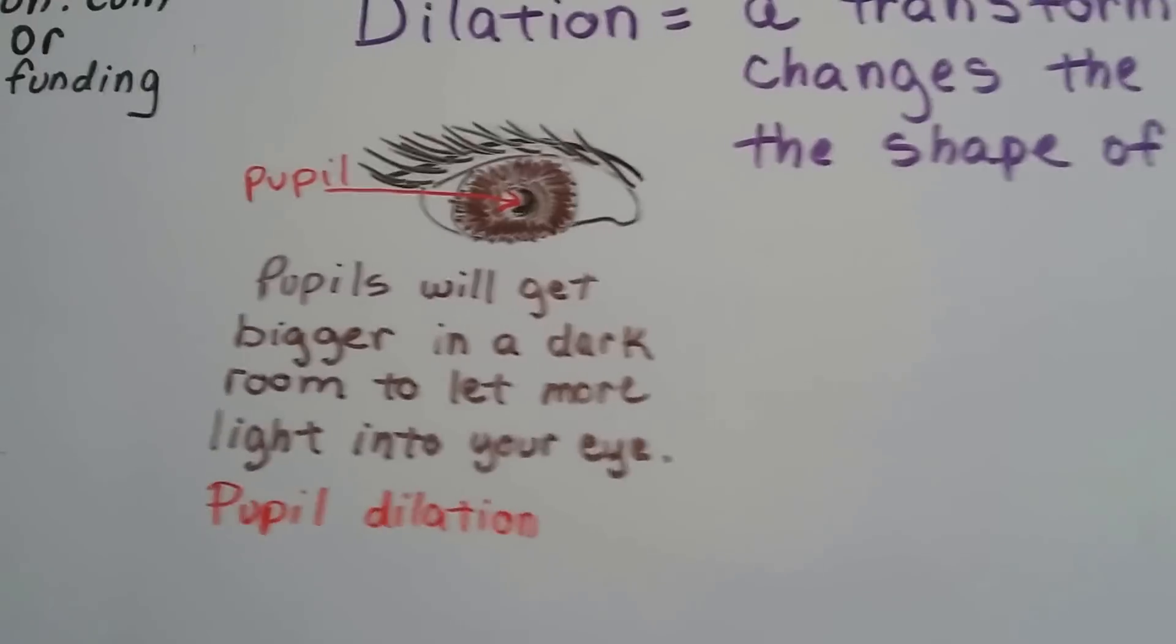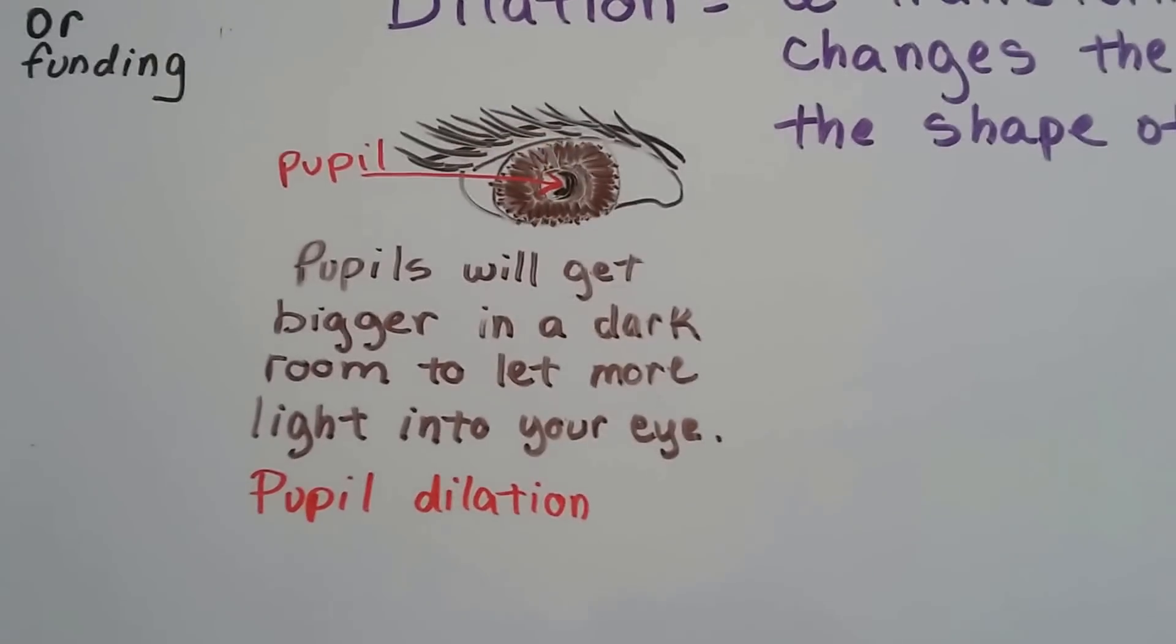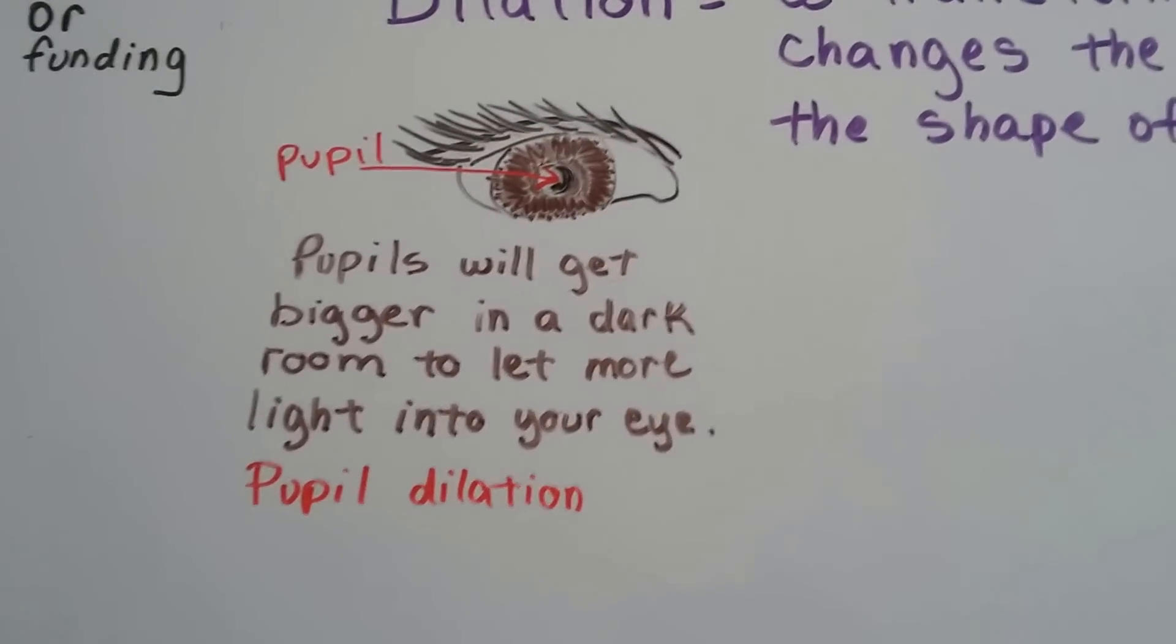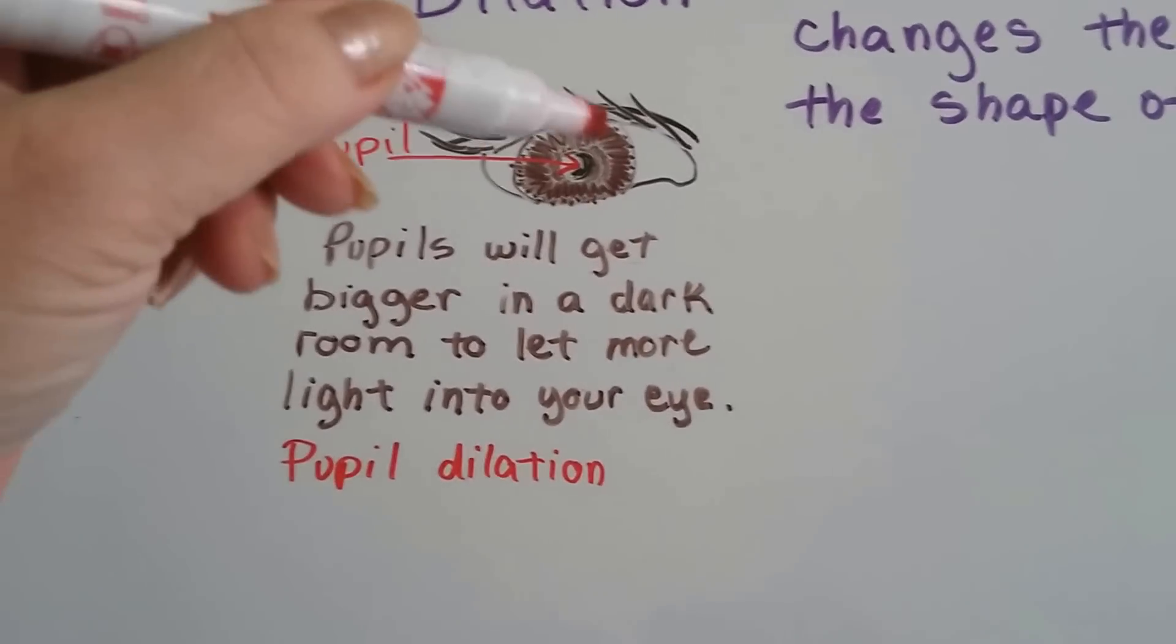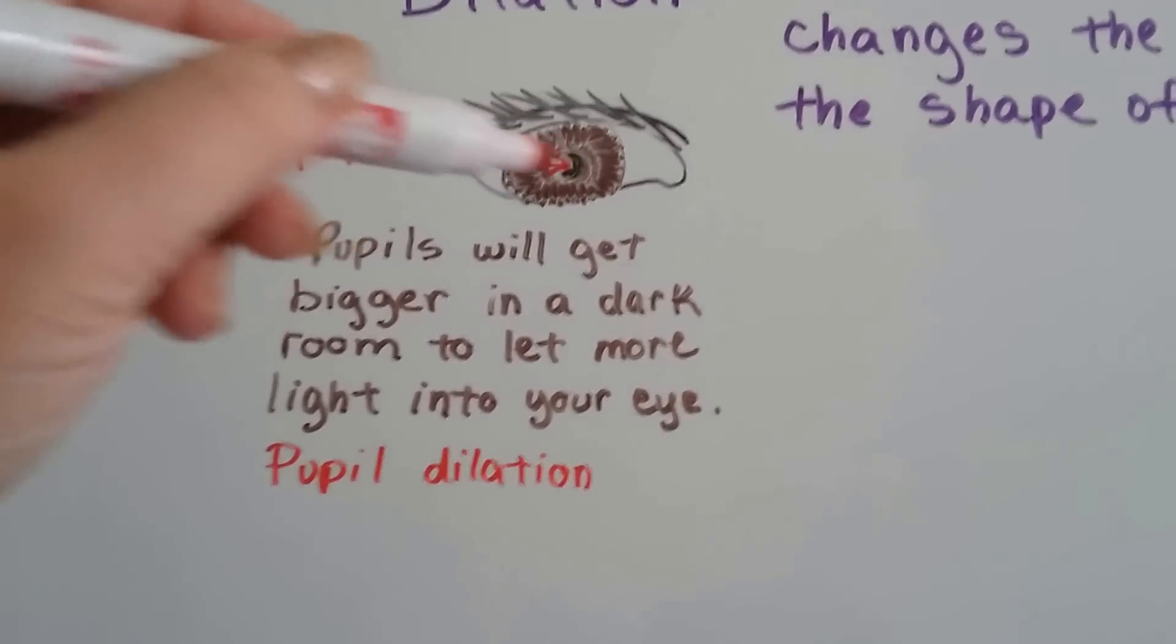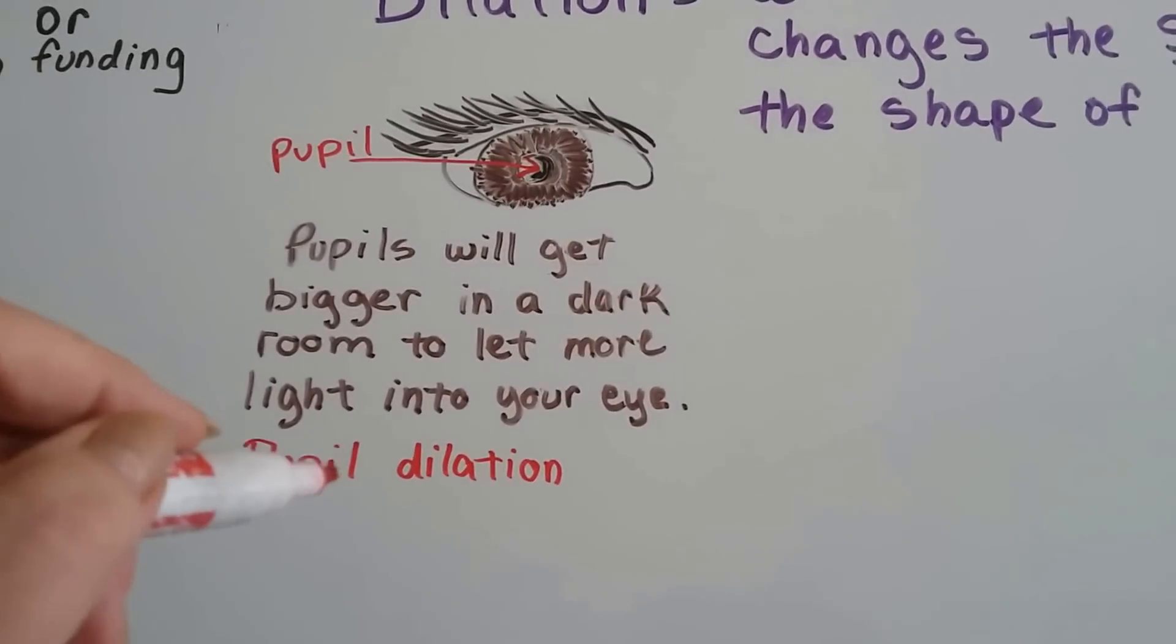You look at your eyes. You have pupils right in the very center of your eye. And they're going to get bigger if you go into a dark room because that helps you let more light in. When it closes tiny, that means you're in a very sunny place, so less light can get in. That's pupil dilation.